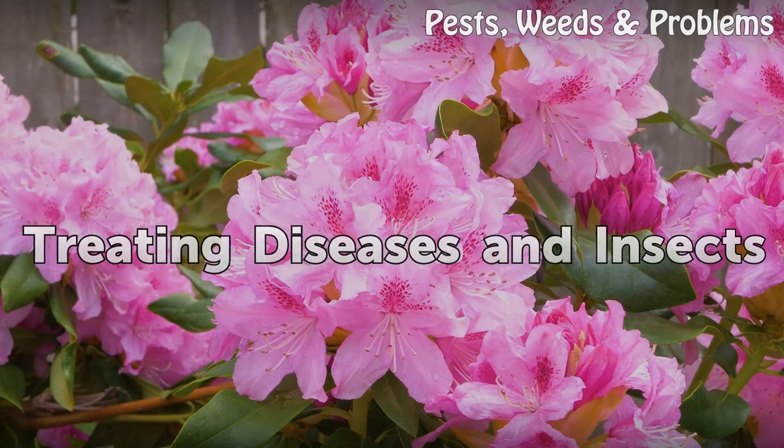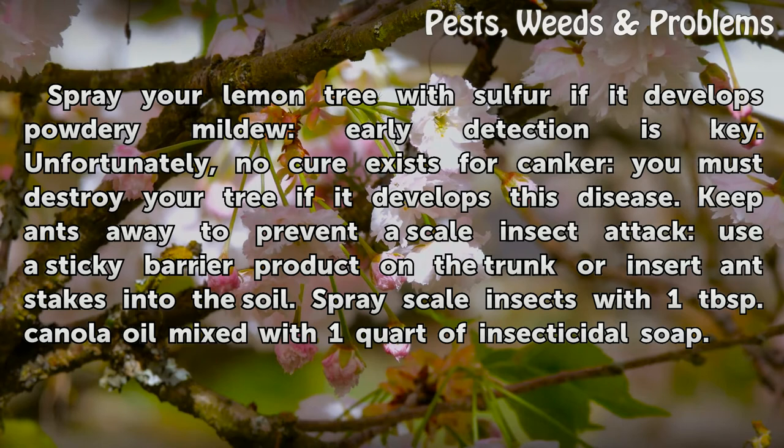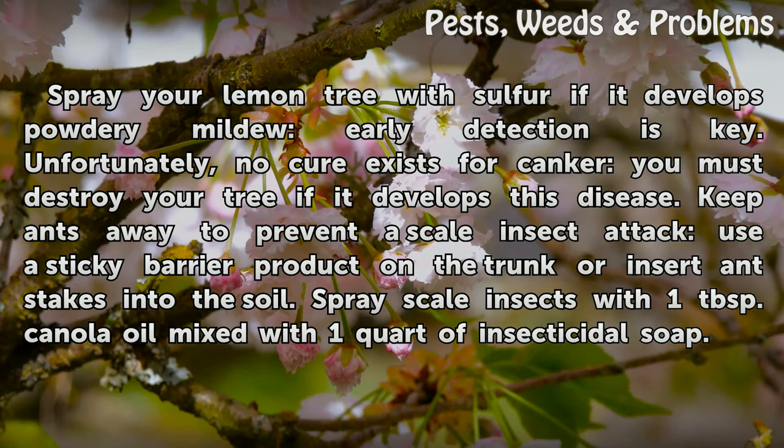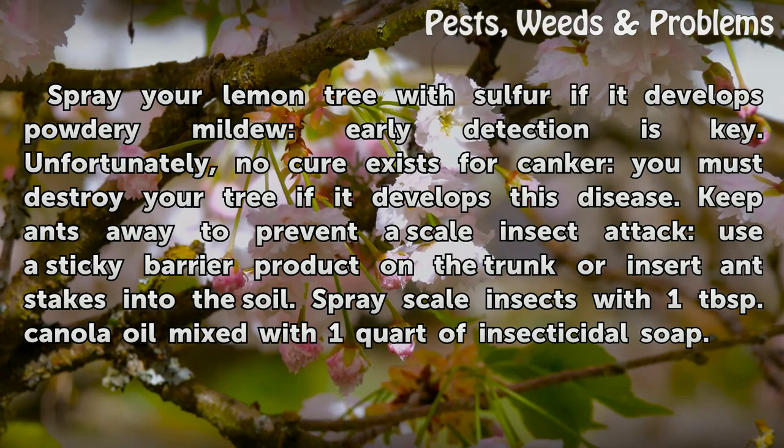Treating diseases and insects. Spray your lemon tree with sulfur if it develops powdery mildew; early detection is key. Unfortunately, no cure exists for canker — you must destroy your tree if it develops this disease. Keep ants away to prevent a scale insect attack; use a sticky barrier product on the trunk or insert ant stakes into the soil. Spray scale insects with 1 tablespoon canola oil mixed with 1 quart of insecticidal soap.